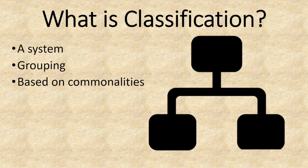Classification is a system used to group living things. This system is made based on things that living things have in common — their common characteristics or traits. When you classify or categorise something, you put it in a group based on things it has in common with others in that group. Carolus Linnaeus used this to create his kingdom of living things, which groups all living things in existence. Classification helps us understand the relationships between living things.